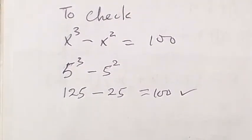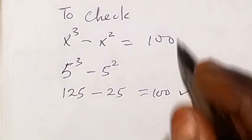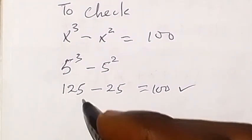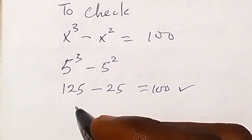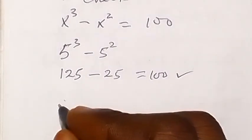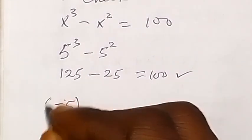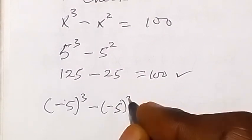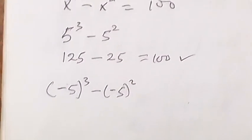Then minus 5 squared, that's 25, equals to 100. So this one is correct, 5 is correct. Also when we put x equals to minus 5 there...